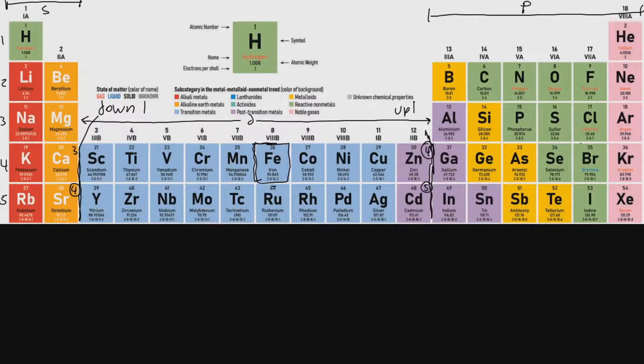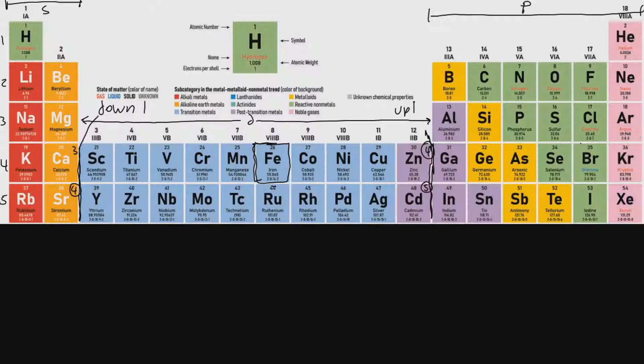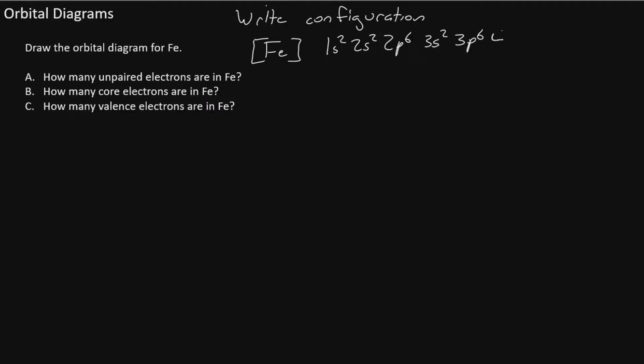Now we continue past level 2 into level 3 we'll have 3s2, 3p6. Now come down to level 4 we'll have 4s2 and 3d 1, 2, 3, 4, 5, 6 for 4s2 3d6.